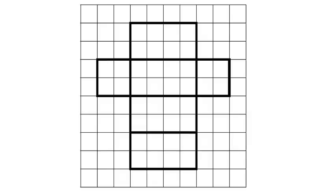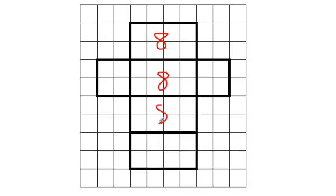Let's find the surface area of this net right here. We can tell this is a rectangular prism — if we cut this out and fold it, it would be a rectangular prism. Let's count the area of each side, starting at the top. We've got a base of 4 and a height of 2, so 4 times 2 is 8. Or you could simply count the squares as well. The next rectangle just below it is exactly the same, as is the one below it, and the one below it. These are all 8, so it's actually pretty simple.